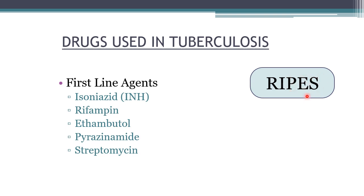In some books streptomycin is included in first-line drugs, whereas in others it is second-line — both are acceptable depending on your reference. Streptomycin is an aminoglycoside, so all these drugs can be given orally except streptomycin, because aminoglycosides are highly polar and cannot be given orally; they are given parenterally via IV or intramuscular route.